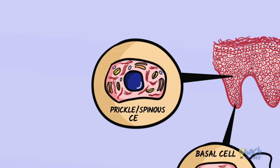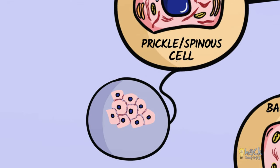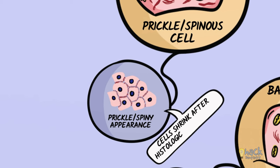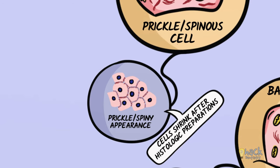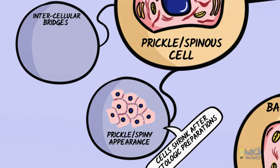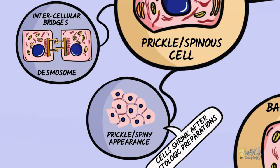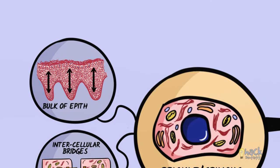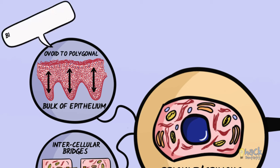The prickle cell layer is so called because of the prickle-like or spiny appearance this layer has as a result of cells shrinking during histologic preparations. As the cells shrink, the cells are seen to be joined by intercellular bridges, which are ultrastructurally known as desmosomes. The spinous layer forms the bulk of the epithelium with large ovoid to polyhedral cells, and there is a significant increase in cell size from the basal layer, accompanied by more protein synthesis in the form of conspicuous tonofibrils.